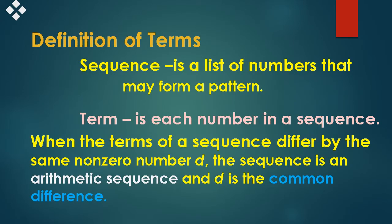Definition of terms. A sequence is a list of numbers that may form a pattern. A term is each number in a sequence. When the terms of a sequence differ by the same number D, the sequence is an arithmetic sequence, and D is the common difference.